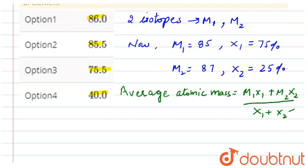So by putting the values here: 85 multiply by 75 plus 87 multiply by 25 divided by 75 plus 25. So from here we get...